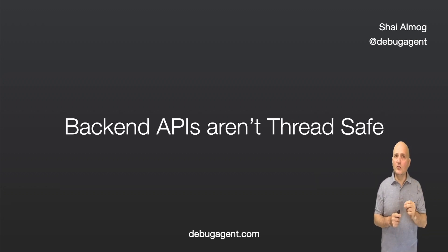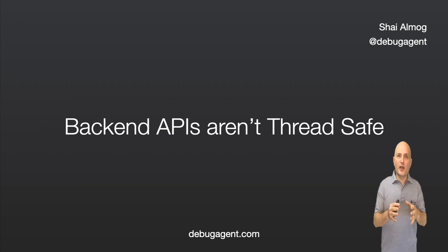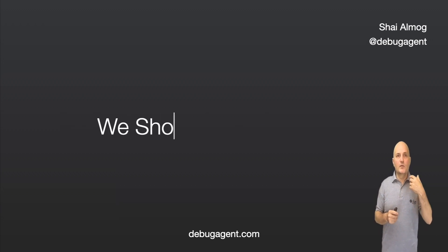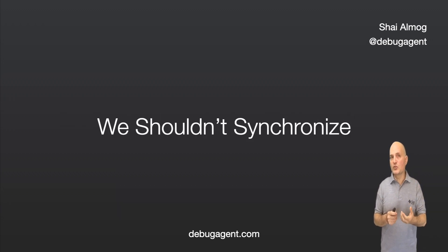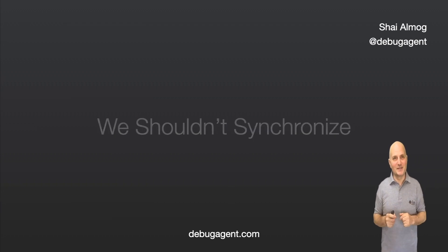Beans aren't thread-safe. This is something that surprises people sometimes, but I've run into quite a few misconceptions about back-end APIs, beans, and components. The source of the confusion is this statement: we shouldn't synchronize back-end code. And yet, it isn't thread-safe. That makes no sense.